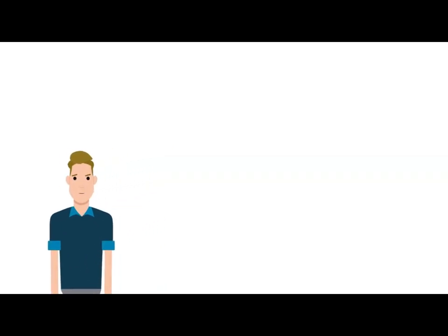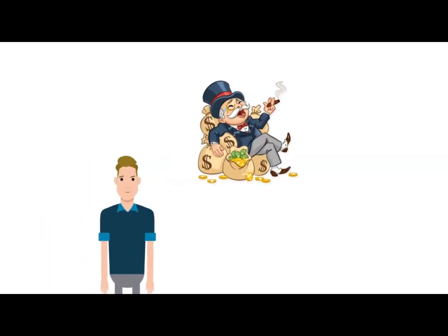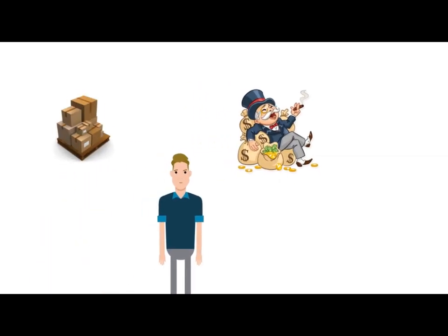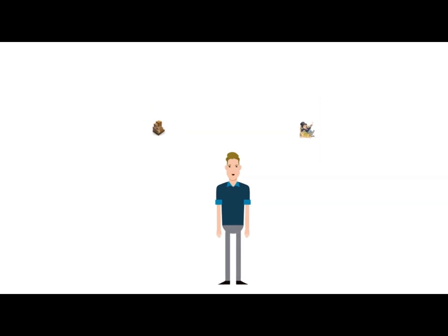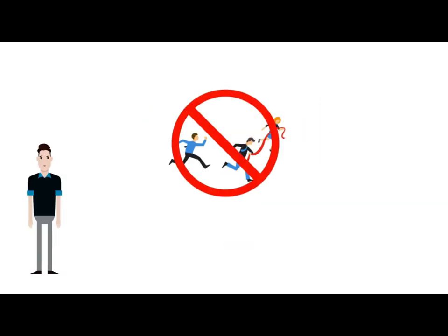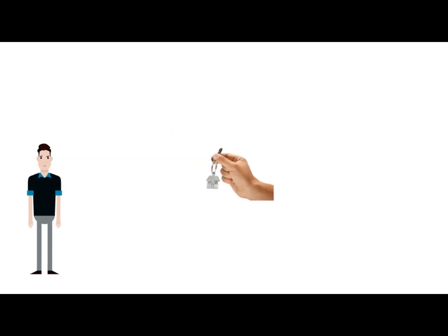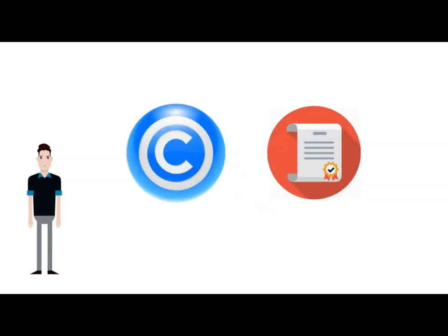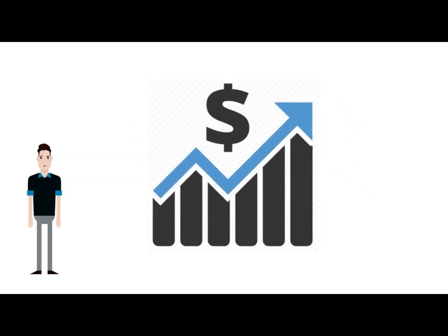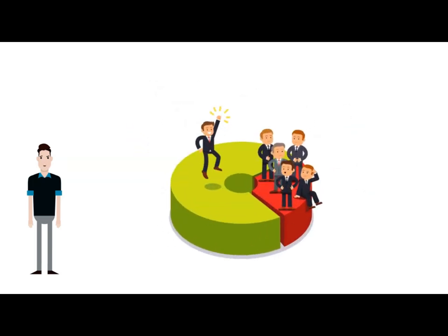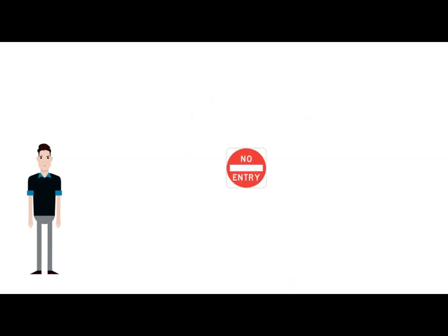Monopoly is a market structure characterized by a single seller selling a unique product in the market. In a monopoly market, the seller faces no competition, as he is the sole seller of goods with no close substitute. Factors like government license, ownership of resources, copyright and patent, and high starting cost make an entity a single seller of goods. All these factors restrict the entry of other sellers in the market.